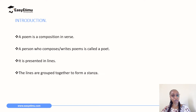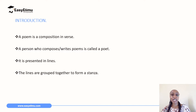If someone stopped you today and asked you to define a poem — what is a poem, what would you say? We can define a poem as a composition in verse. A poem is written in lines; they could be short lines, they could be long lines, and these lines are put together to form what we call a stanza. These verses are called stanzas, and a person who writes or composes a poem is called a poet.